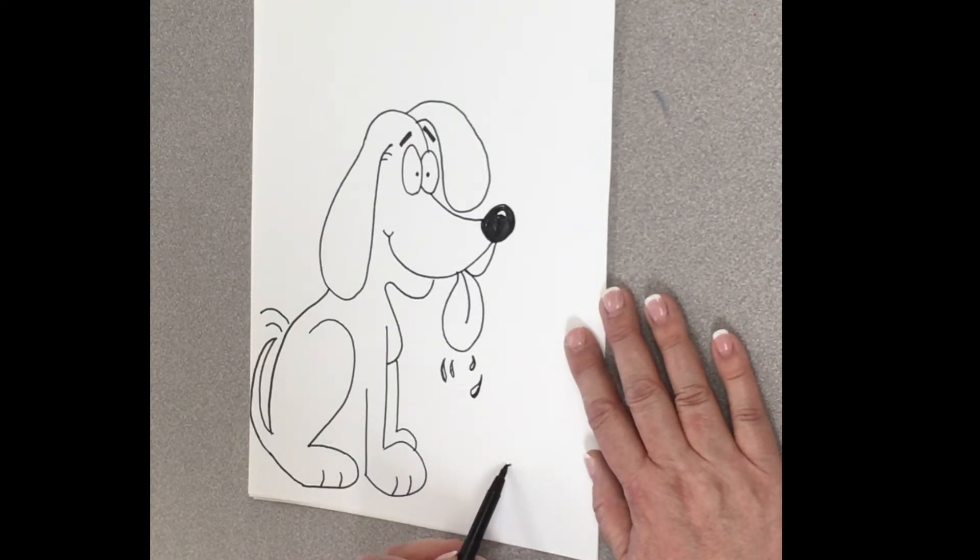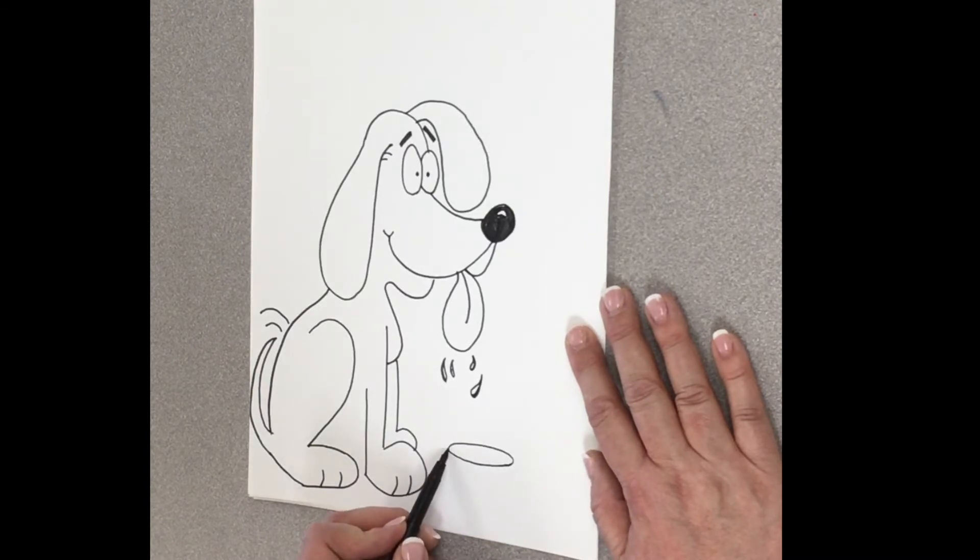So, here's what I'm going to do. I'm going to draw kind of like a flat circle. Like that. All right. Then, I'm going to draw two kind of diagonal lines coming out from his flat circle.